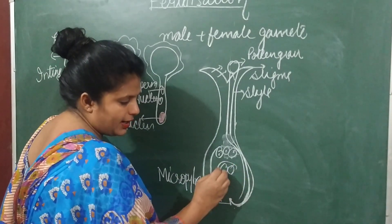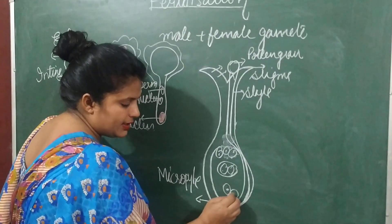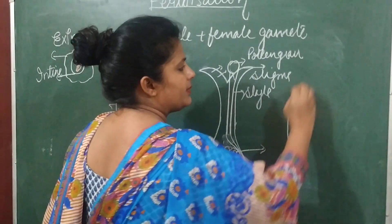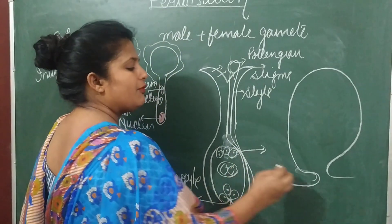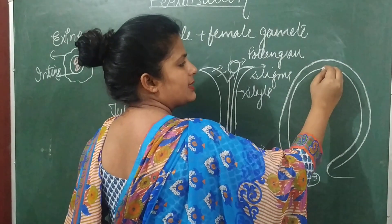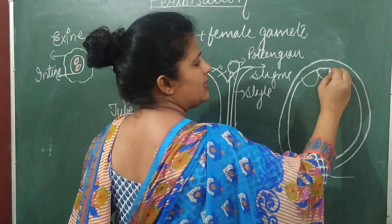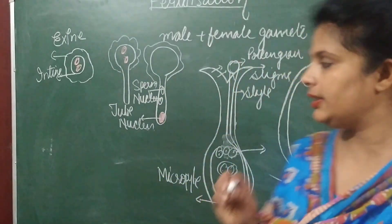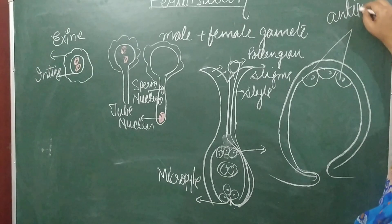Inside the ovule, there are two polar nuclei that form the endosperm nucleus, an egg cell, and two synergid cells. This is a very important diagram for drawing as well as for labeling. There are three cells — these three cells are called antipodal cells. 'Anti' means opposite, so they are located at the opposite end.